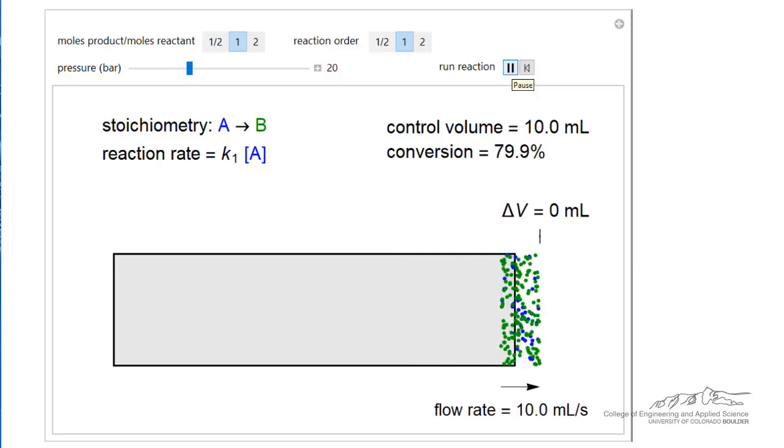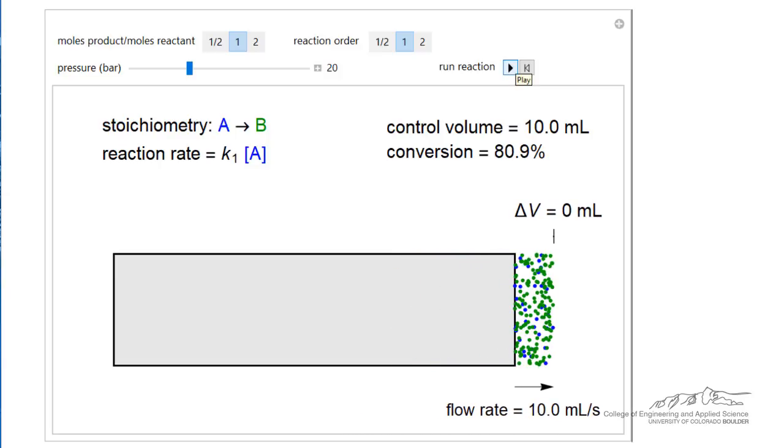And at the exit we have the same volumetric flow rate as the inlet. We can change the reaction order. And the reaction order is going to determine how much reaction takes place when we compare different reaction orders.